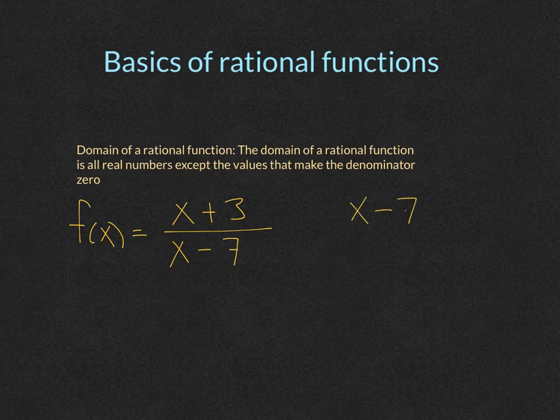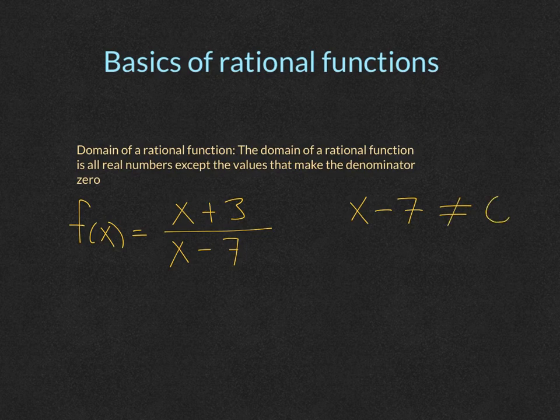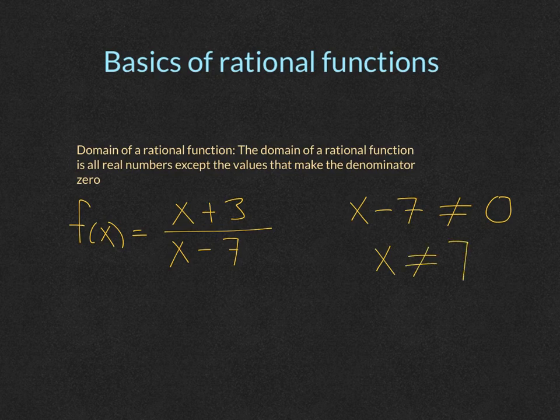We set x minus seven cannot equal zero. So really, you set the denominator equal to zero, and so then we have x cannot equal seven.